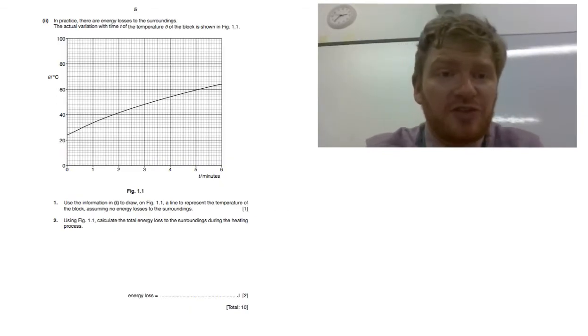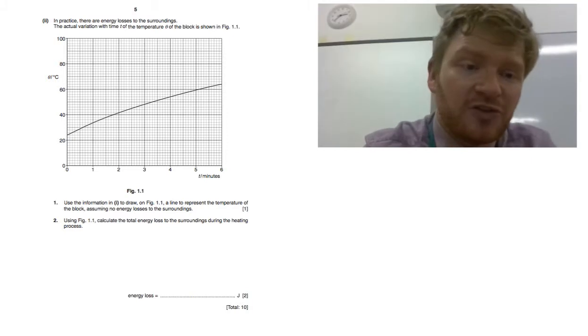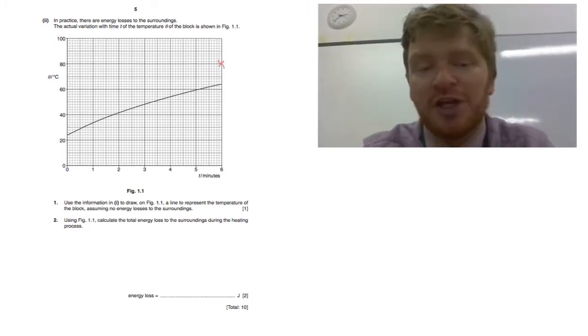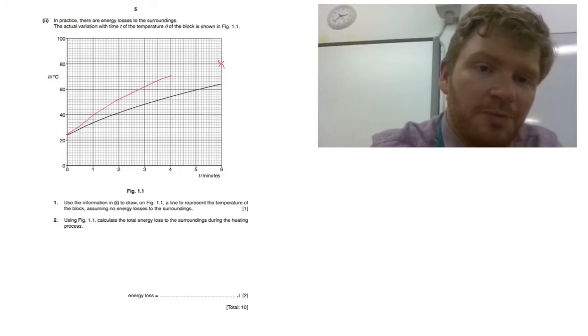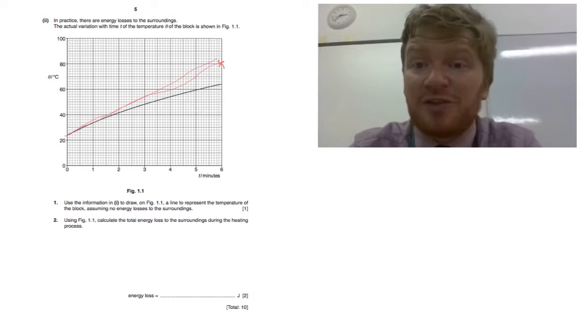Okay, so now we're thinking about the real world. So it says obviously there are going to be any velocities to surroundings. So the actual variation with time T of the temperature of the block is shown in figure 1.1. Use the information in part 1 to draw on figure 1.1 a line to represent the temperature of the block, assuming no heat loss for the surroundings. So what we expected is for it to go from 24 degrees to 80 degrees at six minutes. So I'm going to put a plot point here. I'd expect a straight line coming out.